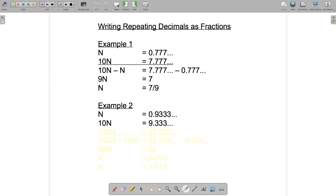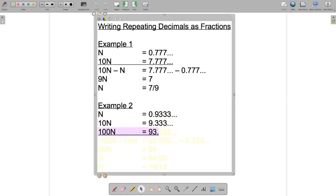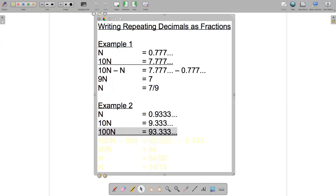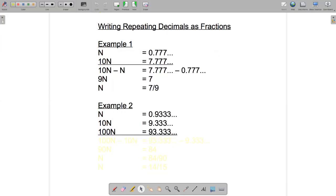So if we don't get a whole number on the first try, let's try the second step up which would be to multiply by a hundred instead of just by 10. So now I have 100n is 93.333.